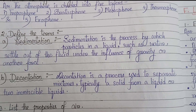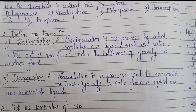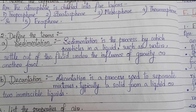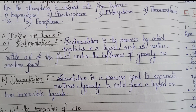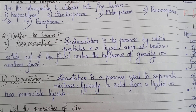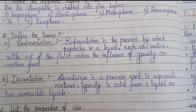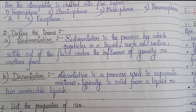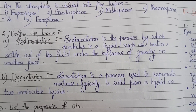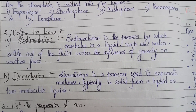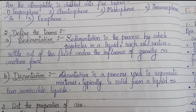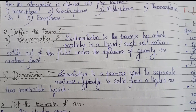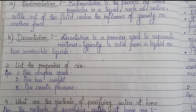Number 2: Define the terms. Number 6: Sedimentation — sedimentation is a process by which particles in a liquid, such as water, settle down to the bottom of the fluid under the influence of gravity or another force. Number 6: Decantation — decantation is a process used to separate mixtures, typically a solid form from a liquid, or two immiscible liquids.